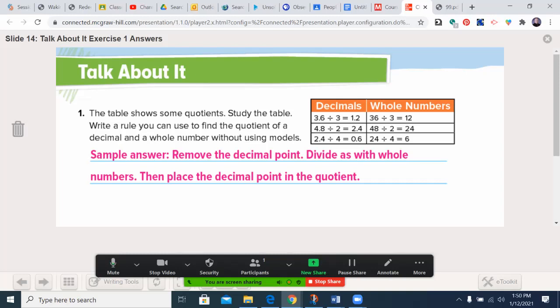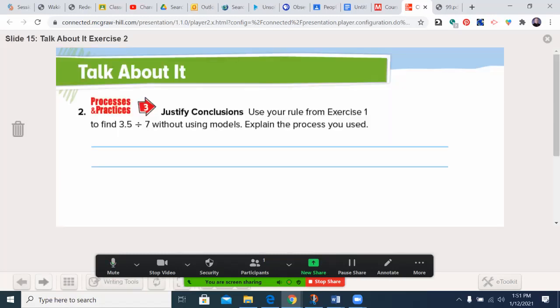Let's see what the book gave us. Remove the decimal point. Divide as with whole numbers. And then place the decimal point in the quotient. So now what we're hopefully seeing is that the math portion of division does not change. And we'll keep learning as we get more details on that decimal point here this week.